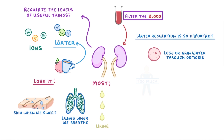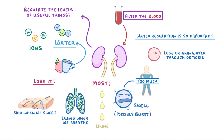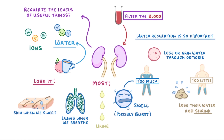The reason why water regulation is so important is that our cells will lose or gain water through osmosis depending on how much water there is in the body. For example, if you have too much water in your body, the water will diffuse into your cells by osmosis, causing them to swell and possibly burst. While if you have too little water, your cells could lose their water and shrink.